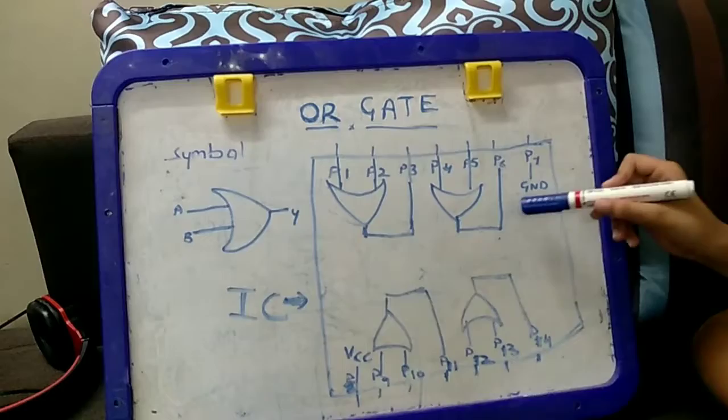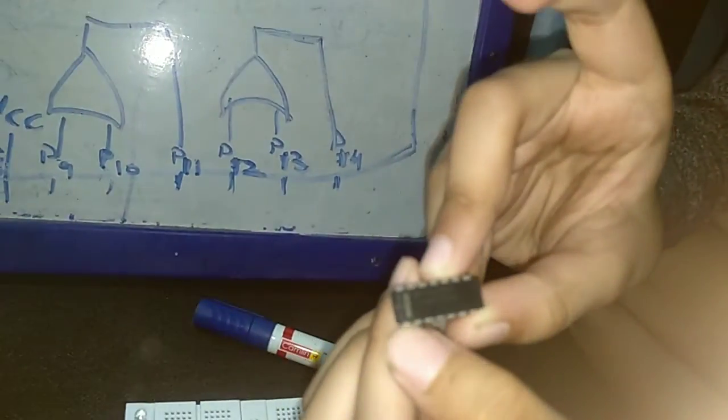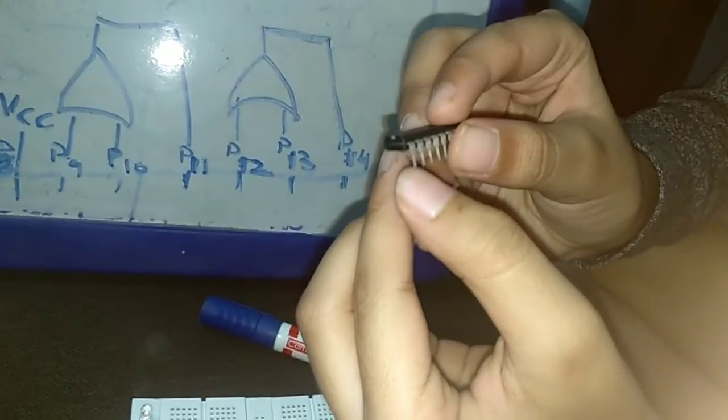This is the OR gate IC diagram. This is the OR gate IC. You can see this little notch. Below this little notch is pin number 1.